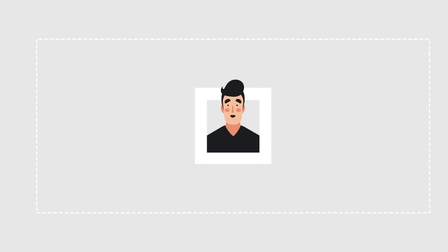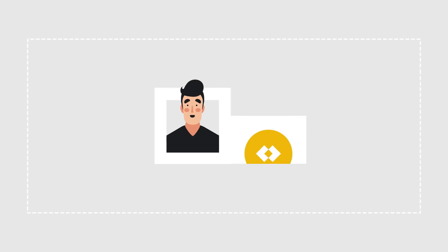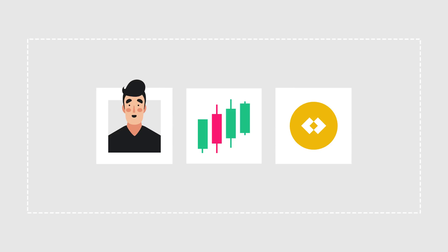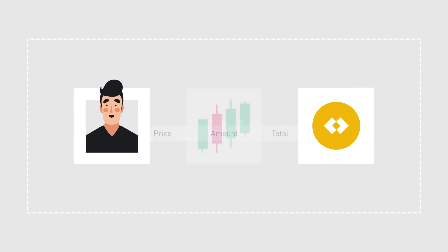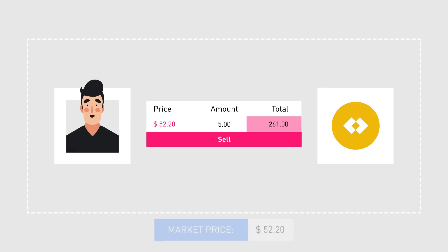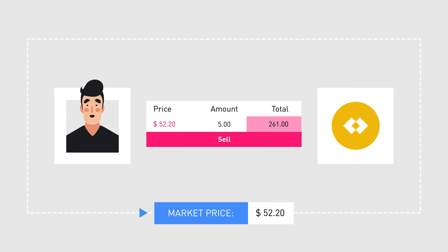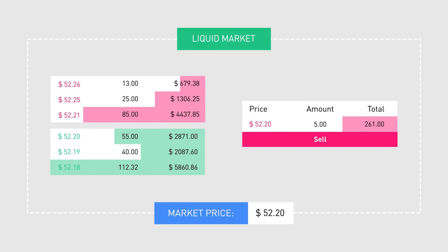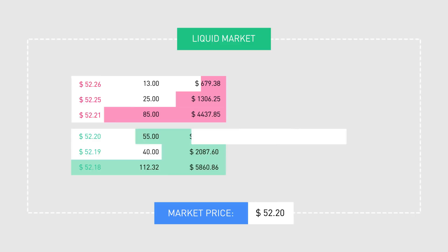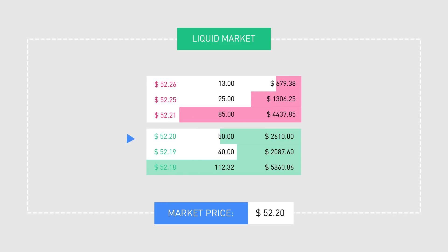Let's take an example from a seller's point of view. Bob has five tokens of a certain cryptocurrency and the price for his tokens has increased in the past few days. Bob is happy and decides to quickly sell all of his tokens for the current market price. If the market is liquid, meaning that there are enough buyers willing to buy Bob's tokens for the price he is asking, Bob is able to sell his assets quickly and at the price he wants. Bob's trade does not affect the token price, since there is sufficient liquidity to accommodate for Bob's trade.